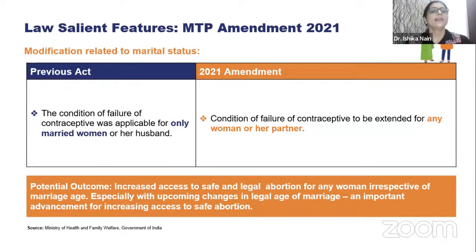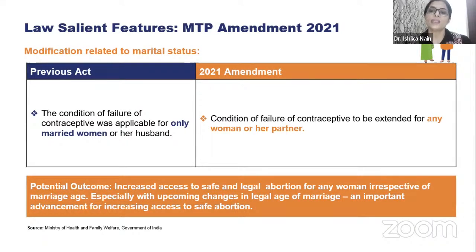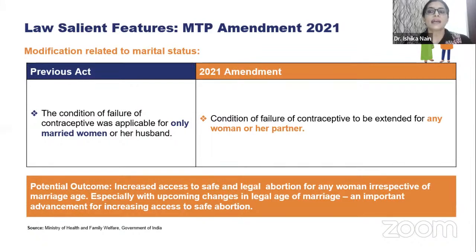Another amendment is the modification related to marital status. Previously, the condition of failure of contraceptives was applicable only for married women or her husband. The 2021 amendment extends this condition to any woman or her partner. This increases access to safe and legal abortion for any woman, irrespective of her marital status. This is especially important with upcoming changes in the legal age of marriage.